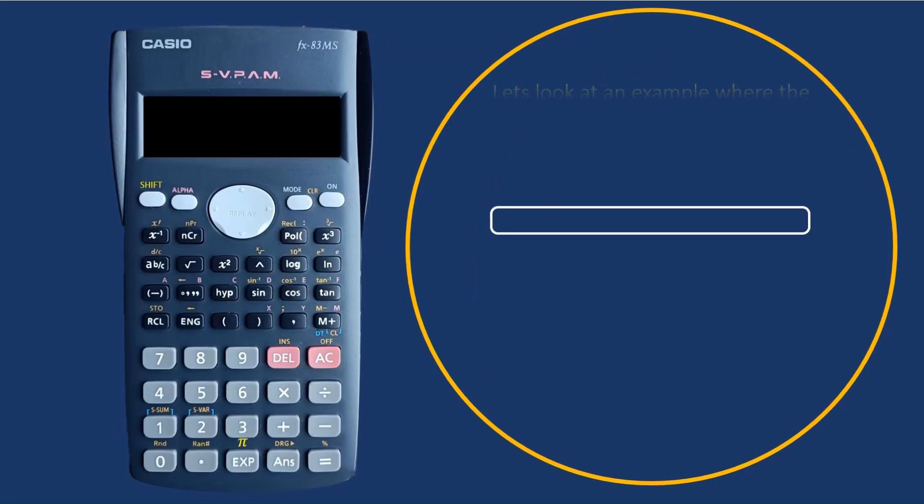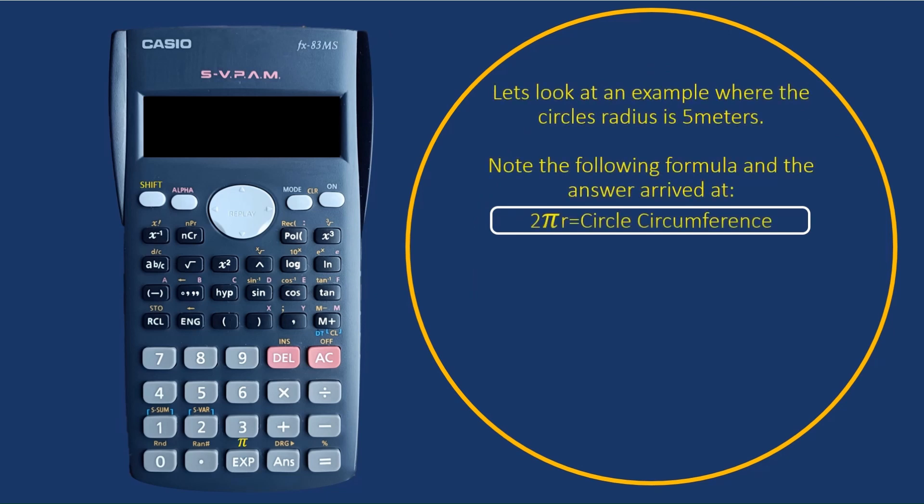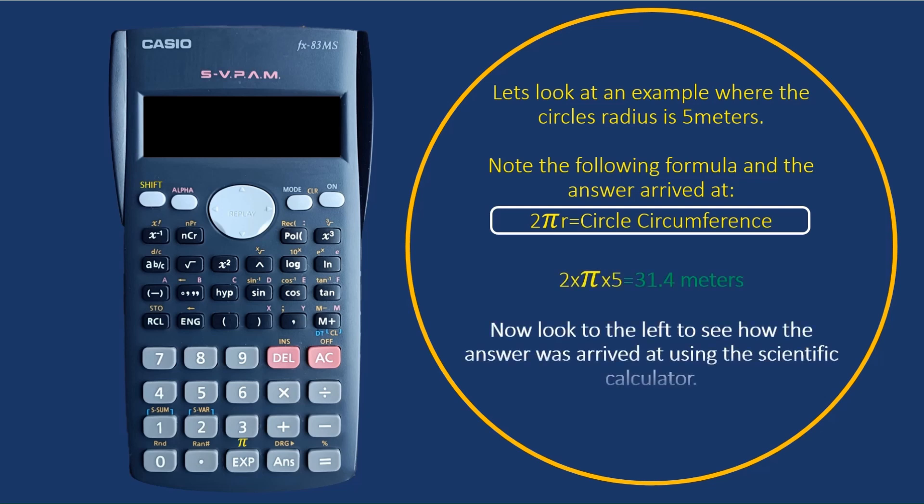Here we're going to take an example where we have a radius of 5 meters. Again, to re-emphasize the formula, it's 2 multiplied by π multiplied by r to get you that circumference. And in this case, when we apply that formula, we get an answer of 31.4.